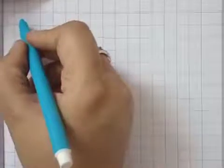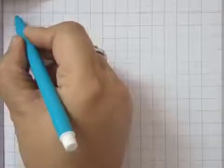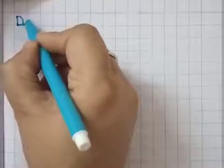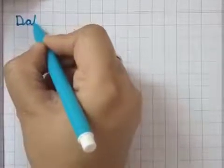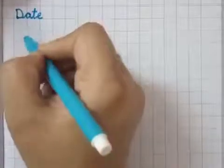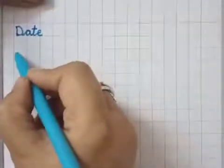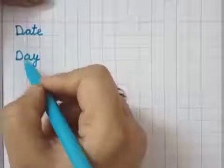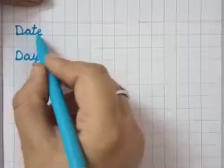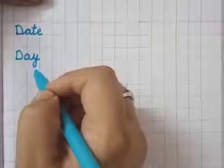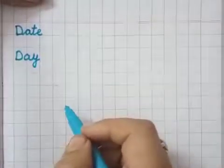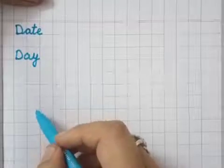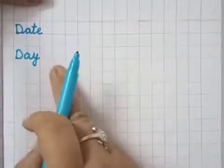First you have to make the format. Write down here capital D, small a, e — Date. Then leave one box and write capital D, small a, y — Day. D-A-Y, Day; D-A-T-E, Date. Whenever you do this work, you have to mention date and day according to that day — jis dhin aap yeh kaam karo, us dhin ki date aur day mention karni hai.